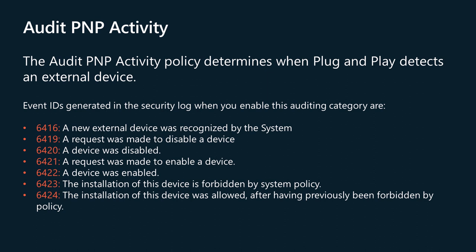6423 — The installation of this device is forbidden by system policy. 6424 — The installation of this device was allowed after having previously been forbidden by policy.